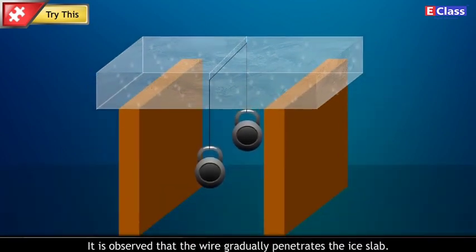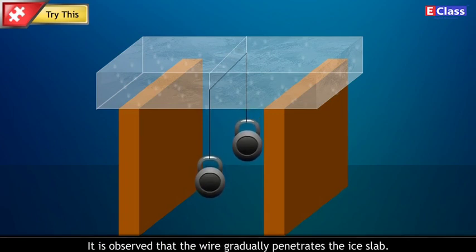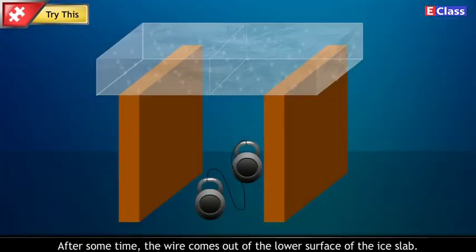What do you observe? It is observed that the wire gradually penetrates the ice slab. After some time, the wire comes out of the lower surface of the ice slab.